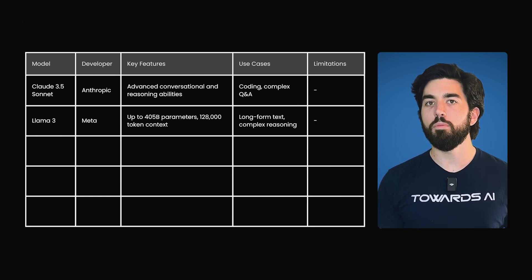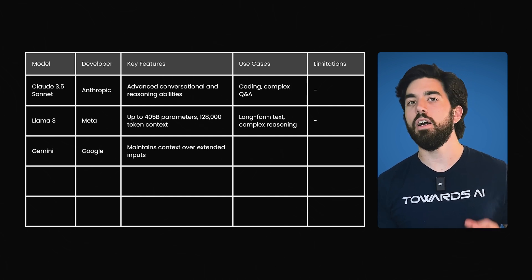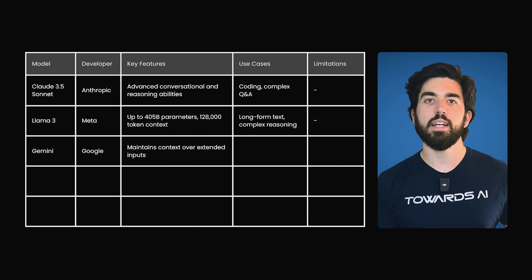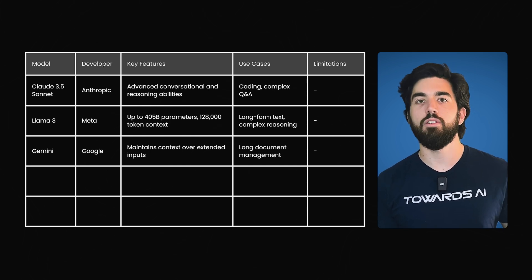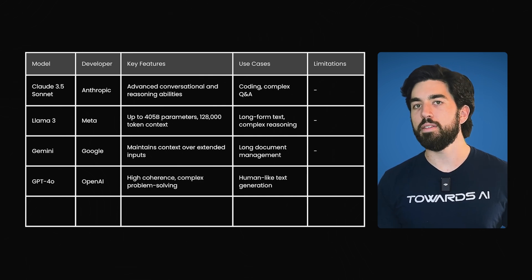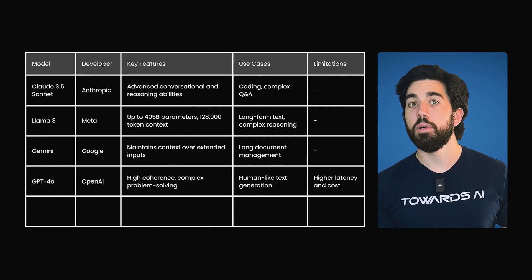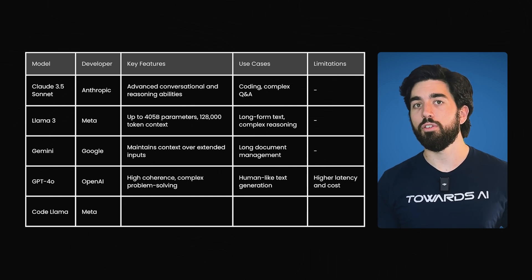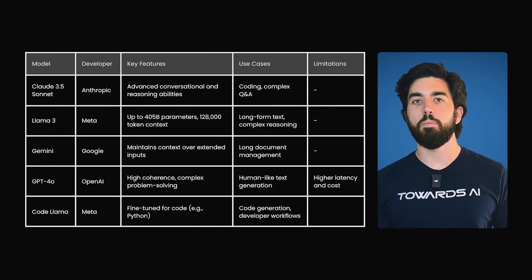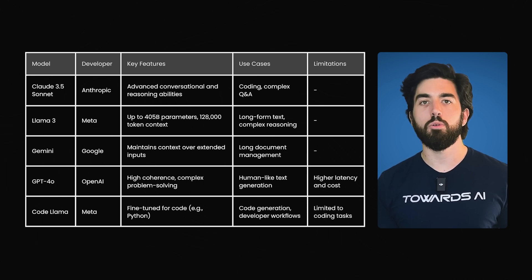Llama 3 is great for maintaining context and performing complex reasoning tasks efficiently. Gemini is ideal for managing the longest documents and maintaining context over extended inputs, making it suitable for tasks involving extensive content. GPT-4o from OpenAI often shines in generating coherent human-like text and complex problem solving, but at a higher cost. O1 is also amazing, but has much more latency and higher costs as well. CodeLlama is a specialized model for code generation with variants fine-tuned for Python and other coding tasks, making it a great option for developers looking to streamline their workflows.